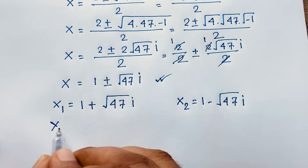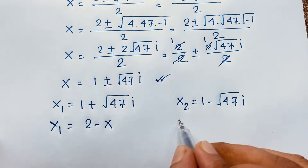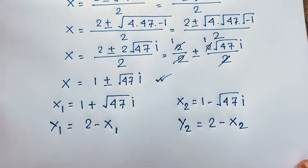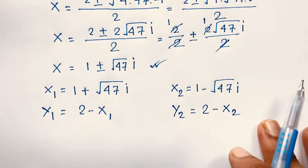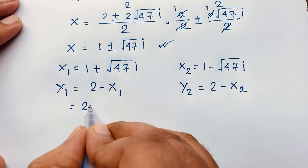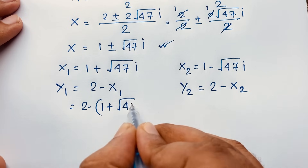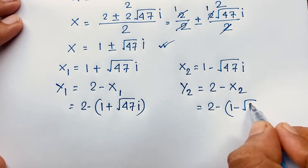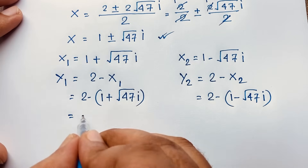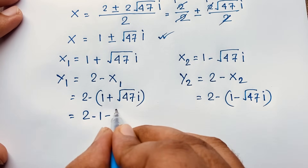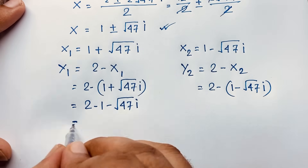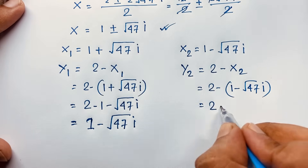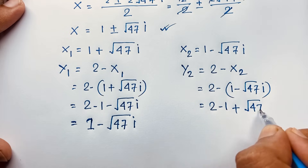Now using our third equation y equals 2 minus x: y₁ equals 2 minus x₁ and y₂ equals 2 minus x₂. So y₁ equals 2 minus (1 plus √47·i), which gives 2 minus 1 equals 1 minus √47·i. And y₂ equals 2 minus (1 minus √47·i), which gives 2 minus 1 plus √47·i equals 1 plus √47·i.